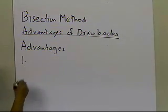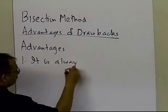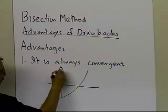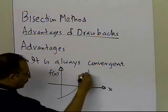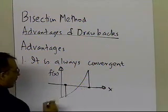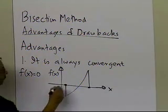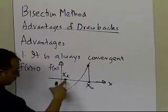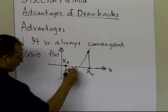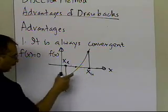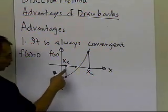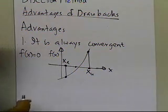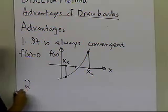The first advantage of the bisection method is that it is always convergent. The reason why it's always convergent is evident from the approach itself. If you look at it from a graphical point of view, we start with some bracket of the root — a lower guess and an upper guess — and as you keep on decreasing the interval size by choosing a new guess as the midpoint, the interval length keeps on halving from one iteration to another. So it's always going to find the interval where the function is changing sign, and there's no way for it to diverge.